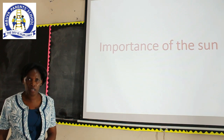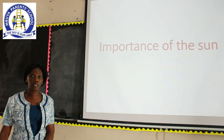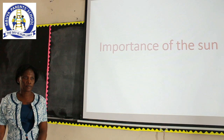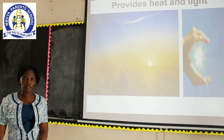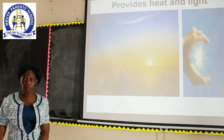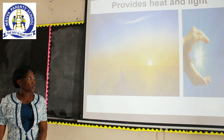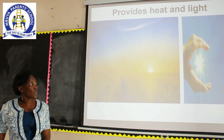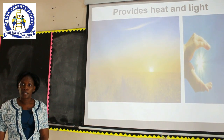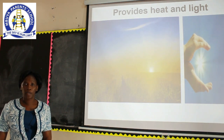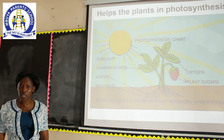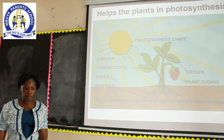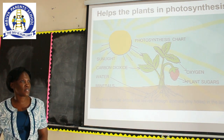Dear children, having described the sun, let's now look at the importance of the sun. The sun provides heat and light. Light from the sun helps us to see during the day. Another use of the sun is that it helps plants to make their own food by the process known as photosynthesis.